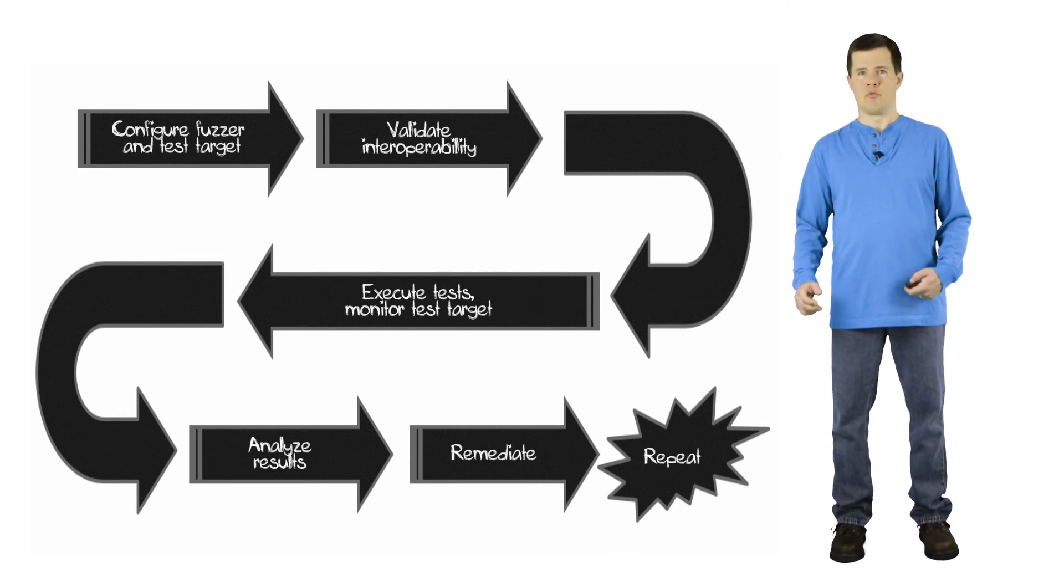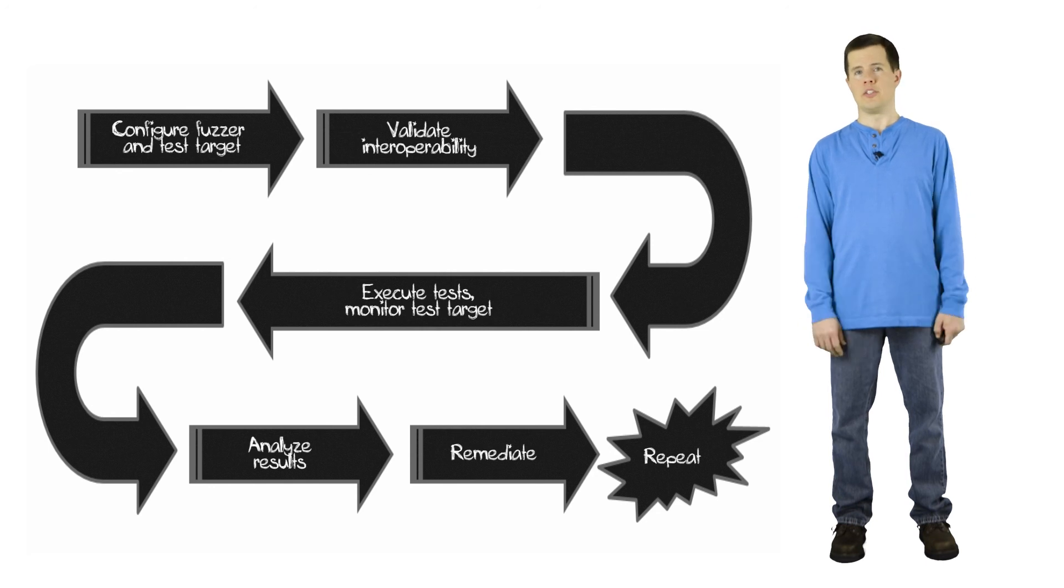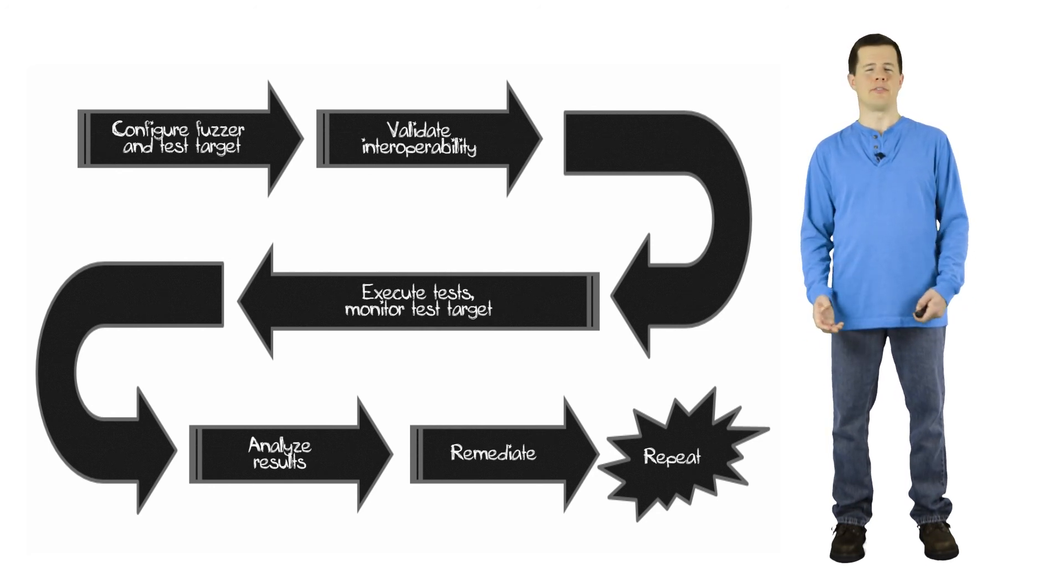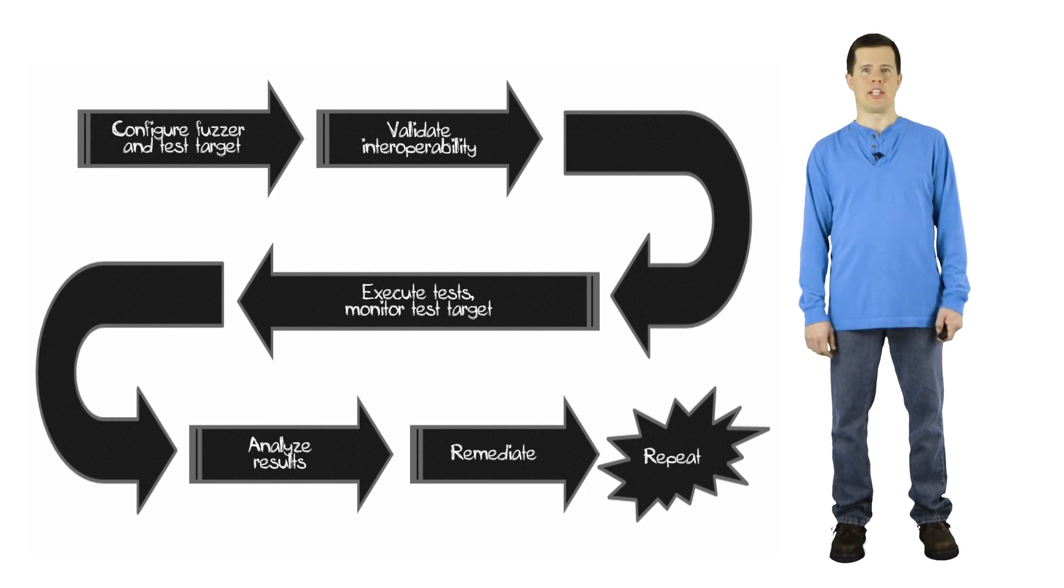And if you've located vulnerabilities, you remediate. You communicate those back to your development team or back to your vendor, whoever's responsible for that code. And then as soon as you get a new version of that software or a new revision of that device, you repeat the process again.